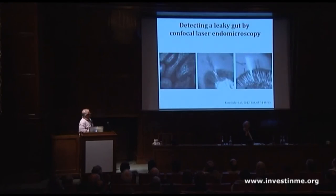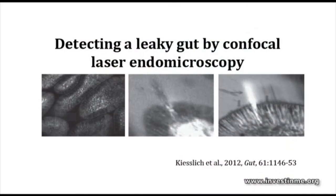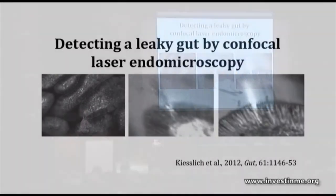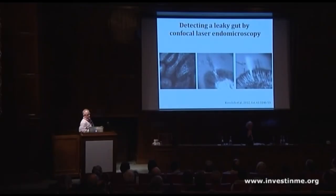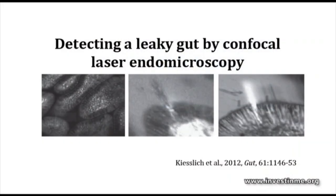We can detect a leaky gut in the hospitals using confocal laser endomicroscopy. Patients are injected via a vein with a fluorescent probe — a healthy intestine shows the dye contained within the villus with none in the lumen. This is an intact gut. In a patient with inflammatory bowel disease you can see a plume of fluorescence coming out of the epithelium, indicative of a leaky gut. In patients where this can be restored and the gut healed, they have a very good prognosis and will remain disease-free for a significant period of time.